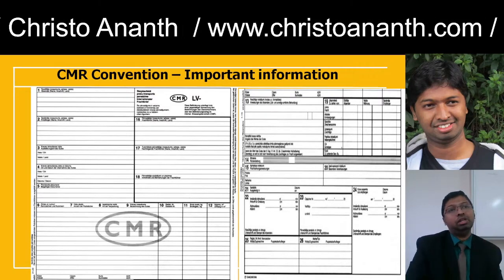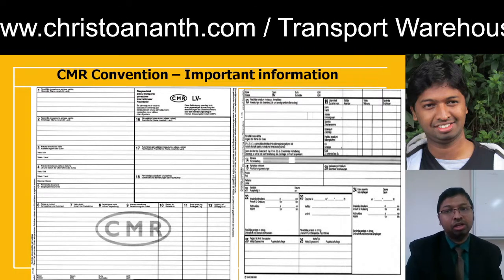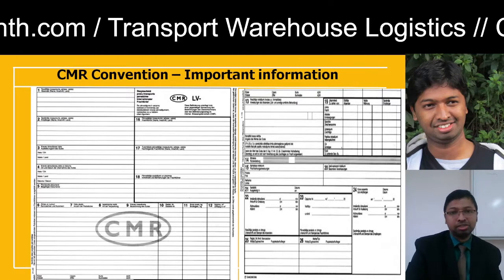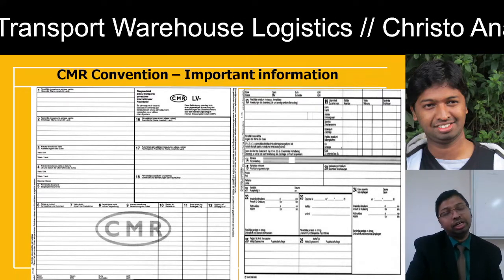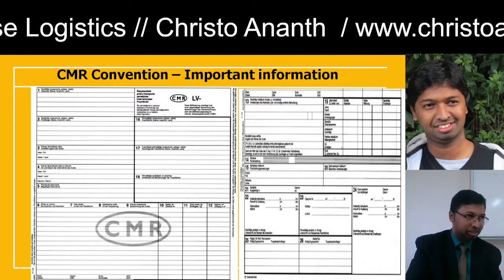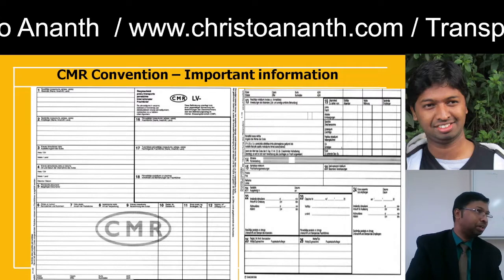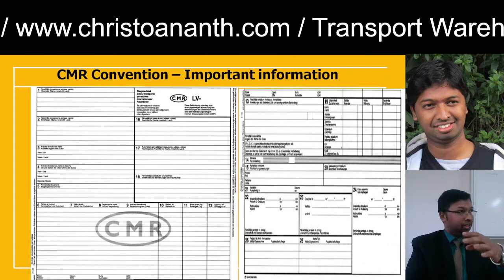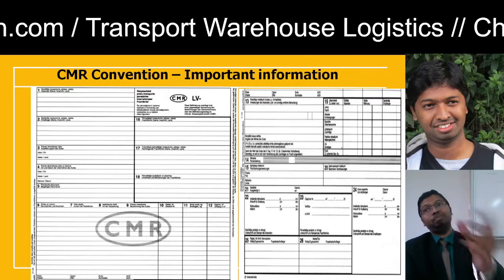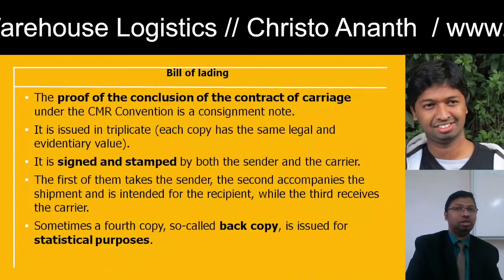You should agree to the Convention and carry over these agreements at the beginning, because during a problem you cannot apply later. The most important part of the CMR Convention is that it does not apply after the fact — it applies only at the beginning. Then we come to Bill of Lading, BOL, which is a proof of the contract of carriage under the CMR Convention.